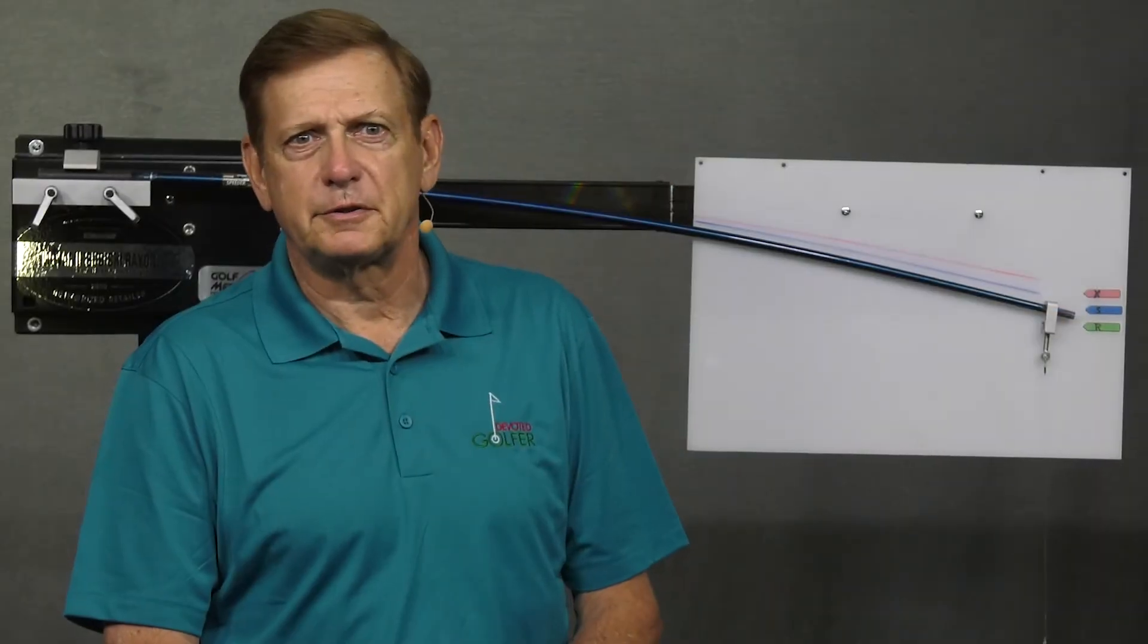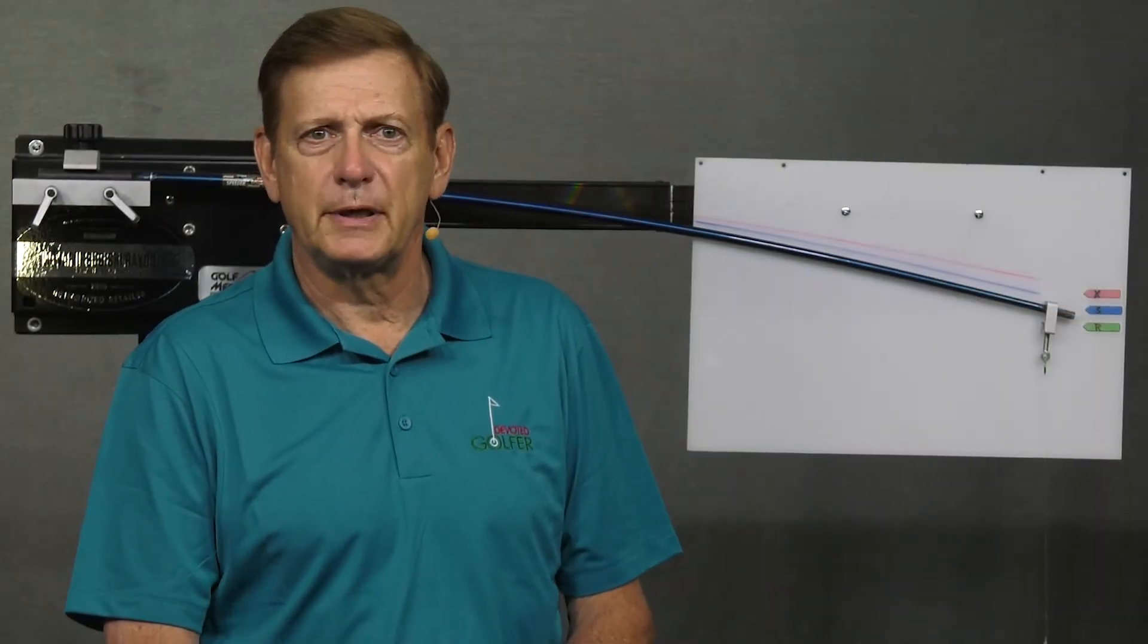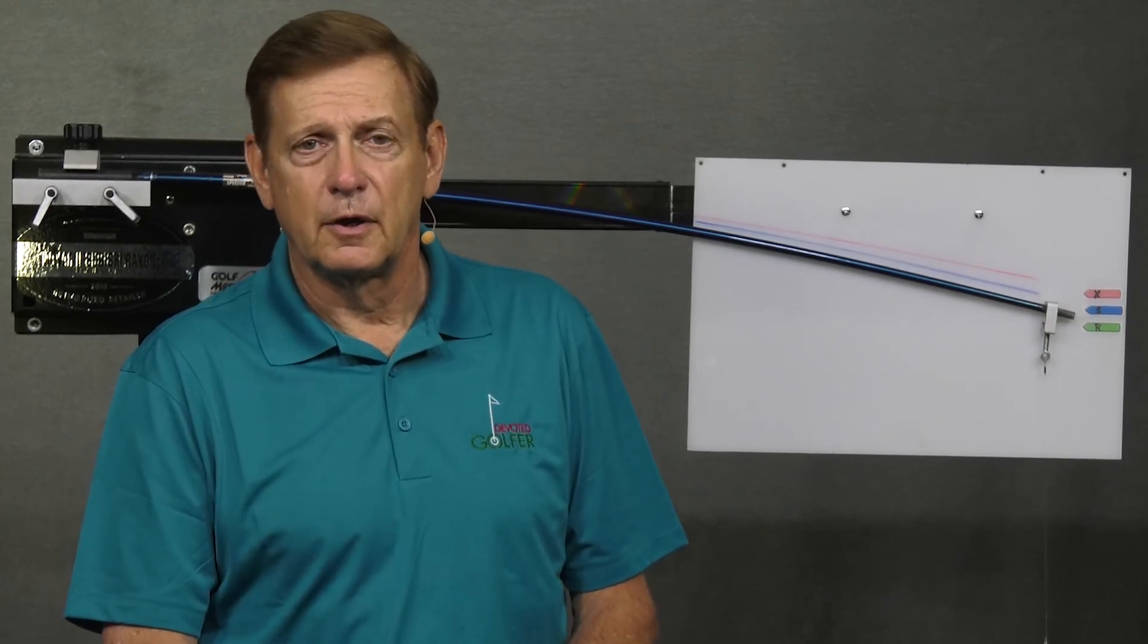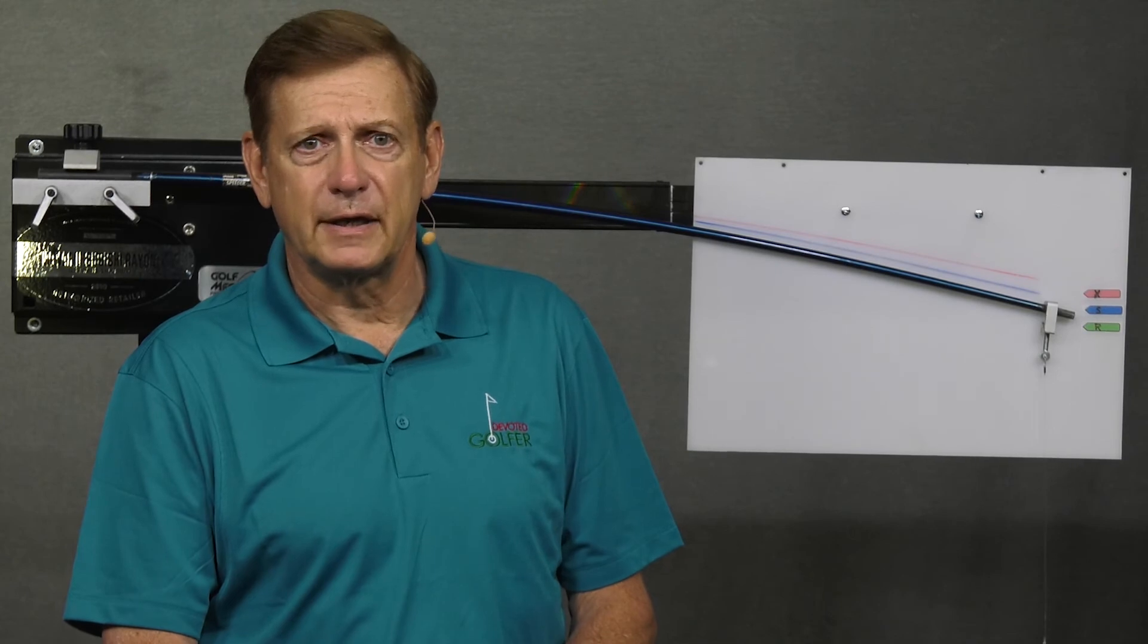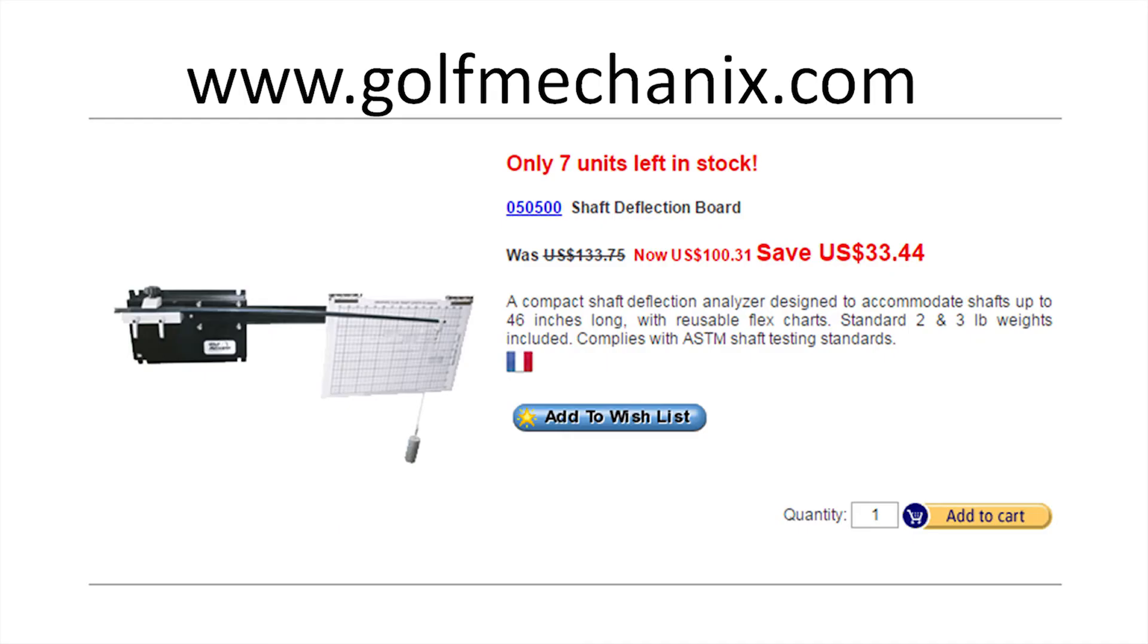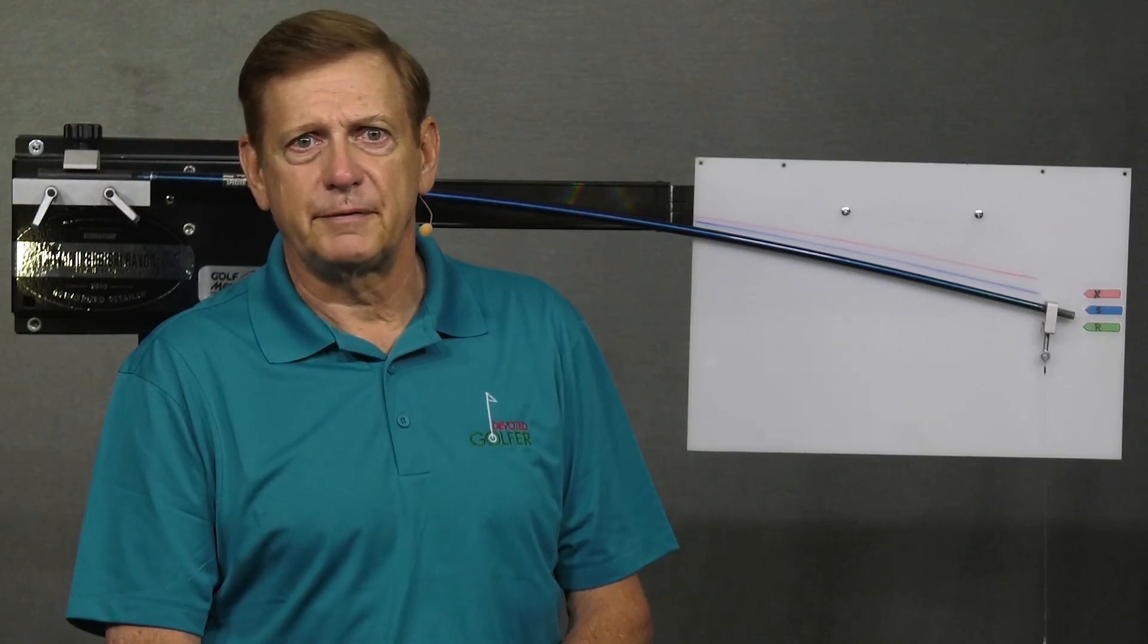Deflection boards remain a low-cost way to rate overall shaft stiffness. More precise deflection instruments are used by many club companies and by the shaft companies that supply them. For some club companies, they are the standard. This particular board is sold by Golf Mechanix, and it looks like they might be getting discontinued due to lack of interest. As of the making of this video, the site says 7 left.